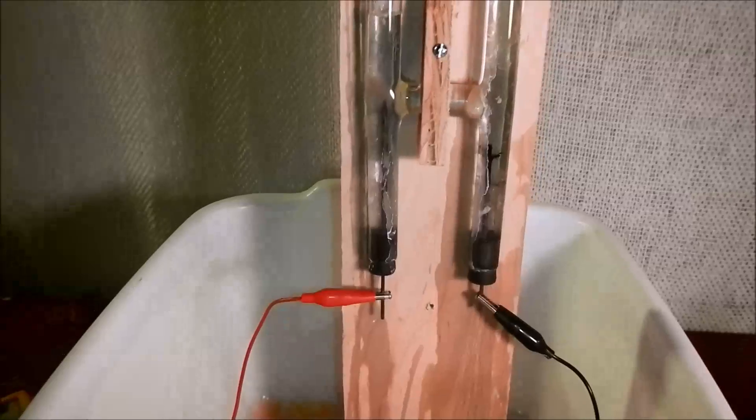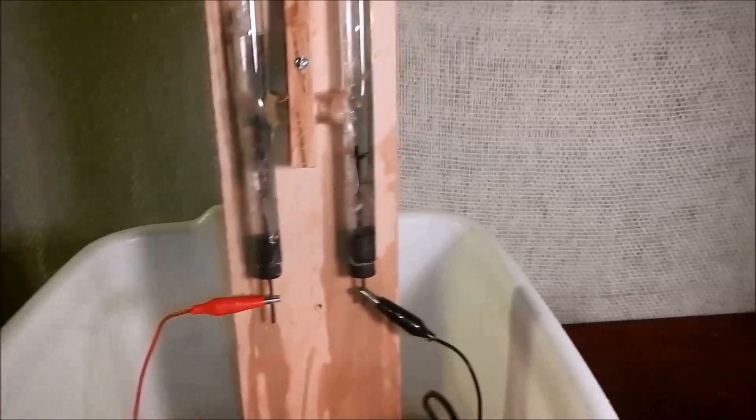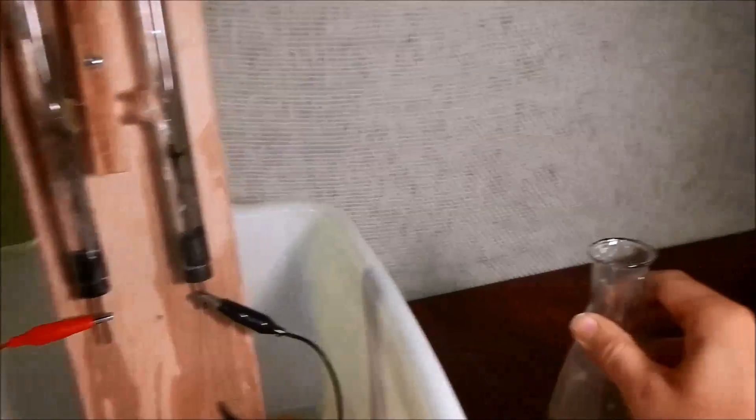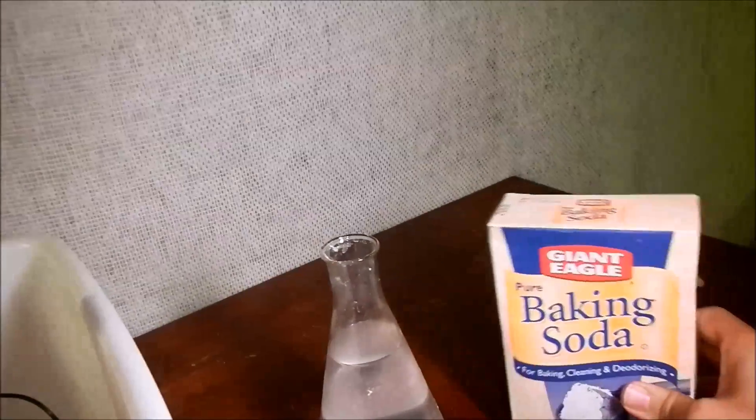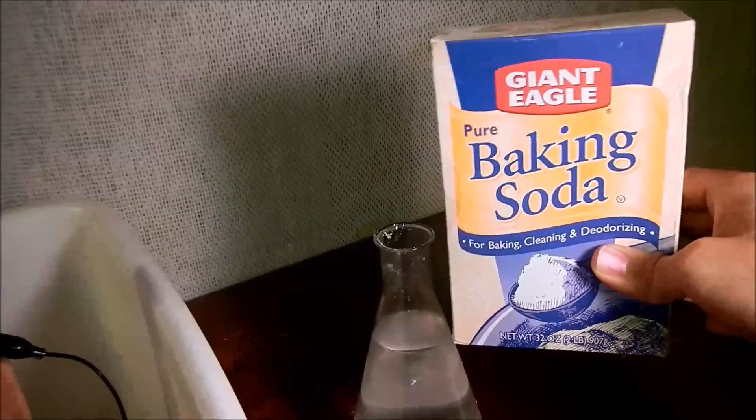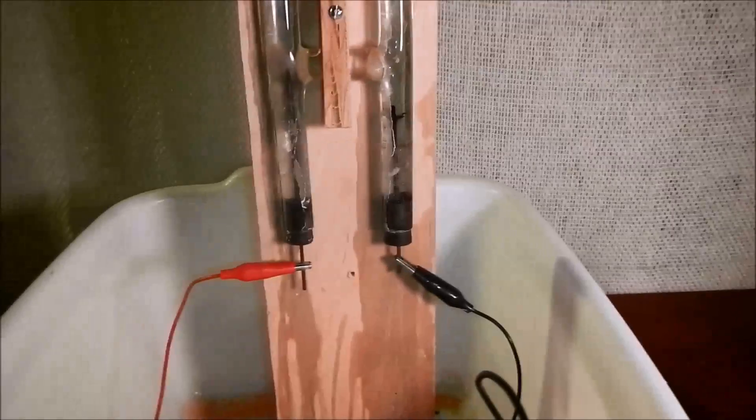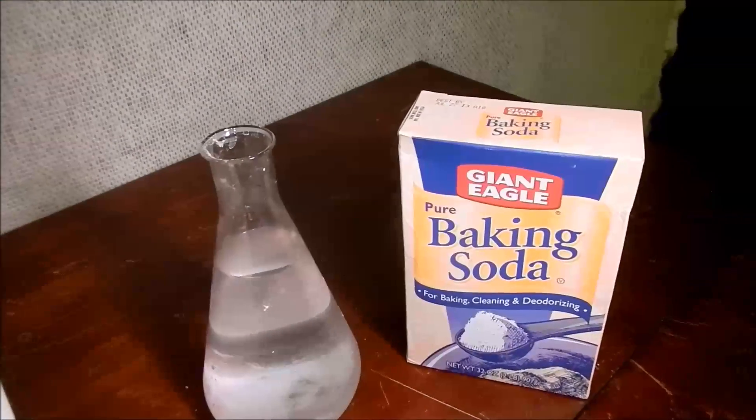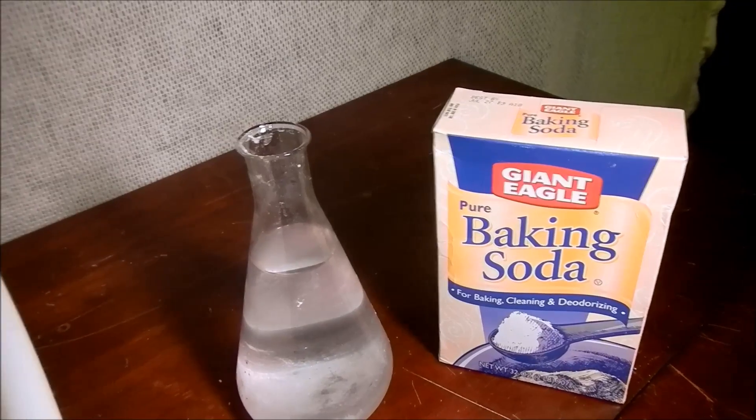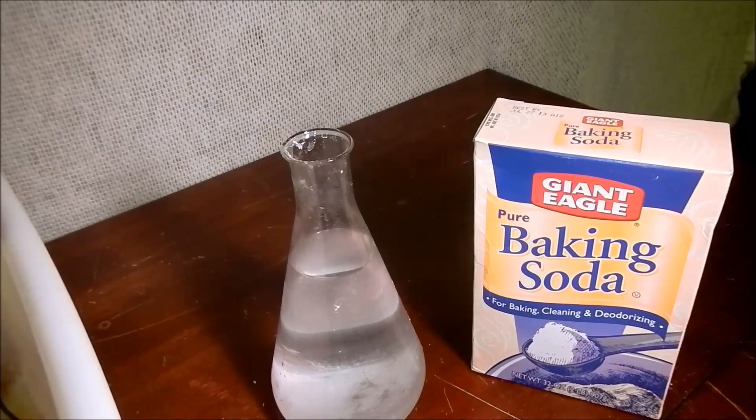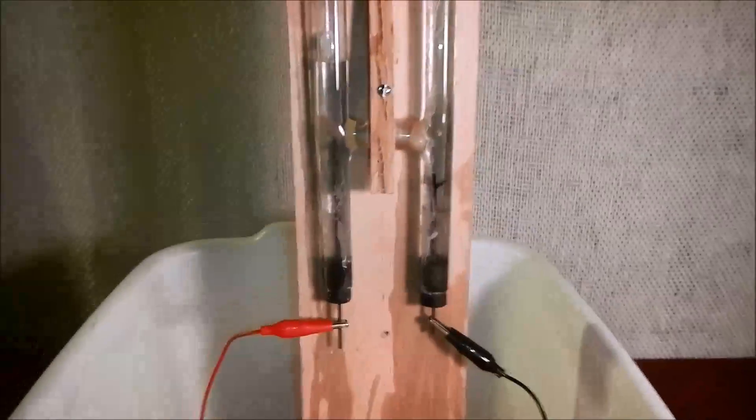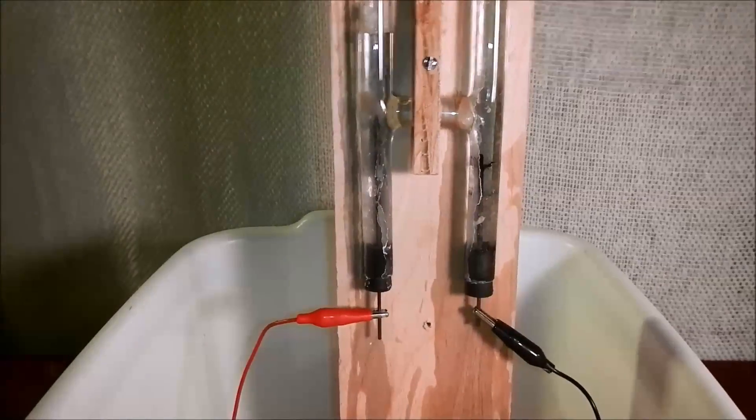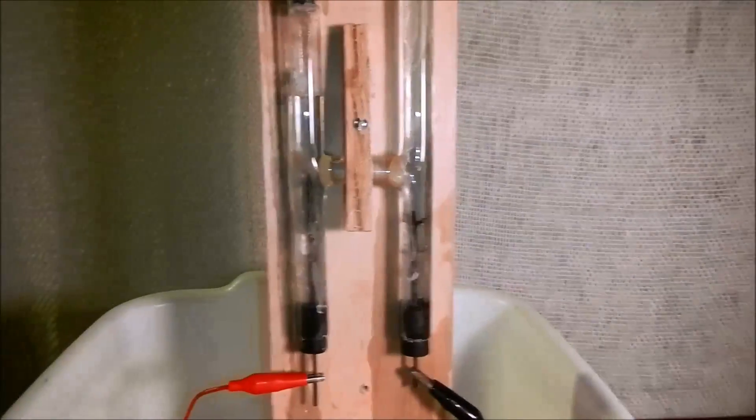And this has, as the electrolyte, water mixed with baking soda. I think baking soda is really great because it neutralizes both things that are very caustic and very acidic, so it keeps the pH of your electrolytic water pretty safe.